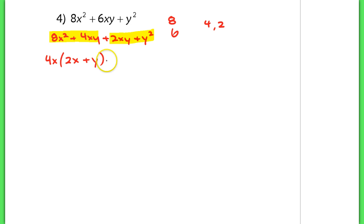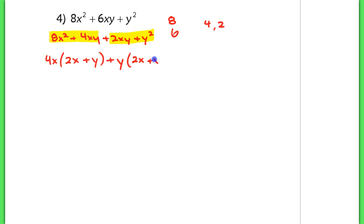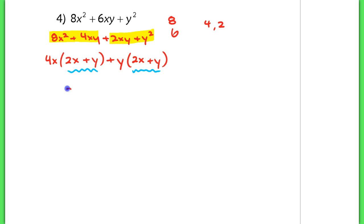That's the only thing they really have in common — a positive y. I'd be left with 2x in the first term, and then y in the second term. Because I see the same thing in parentheses, I know I'm doing it right. I'm left with 2x plus y.